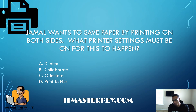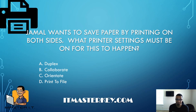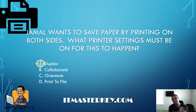Next up — Jamal wants to save paper by printing on both sides. What printer setting must be on for this to happen? Easy: duplex. If the duplex setting is on, it's going to print on the front as well as the back.